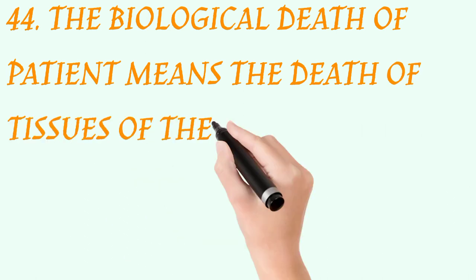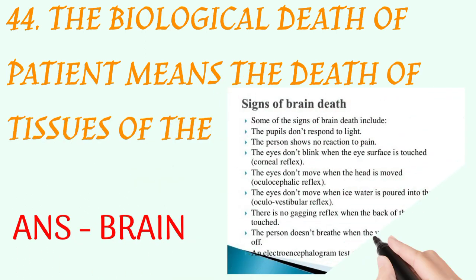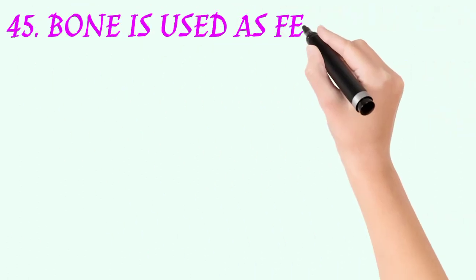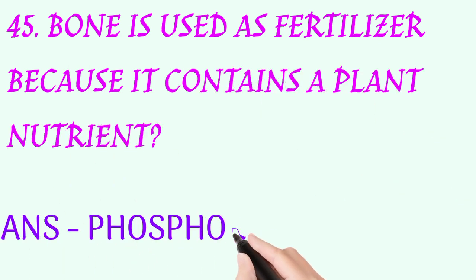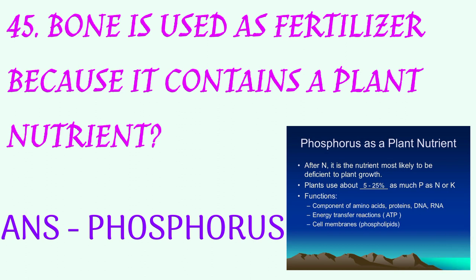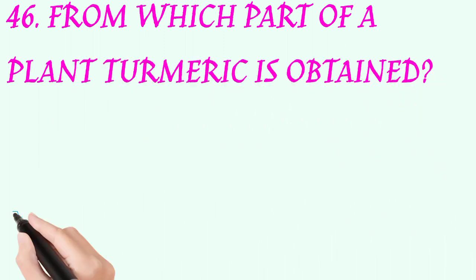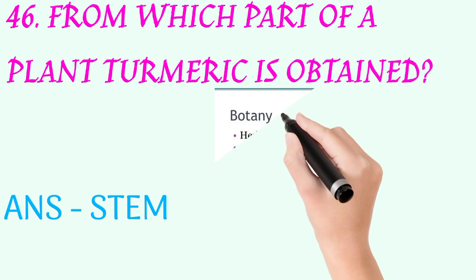The biological death of a patient means the death of tissues of the? Answer: brain. Bone is used as a fertilizer because it contains a plant nutrient. Answer: phosphorus. From which part of a plant is turmeric obtained? Answer: stem.